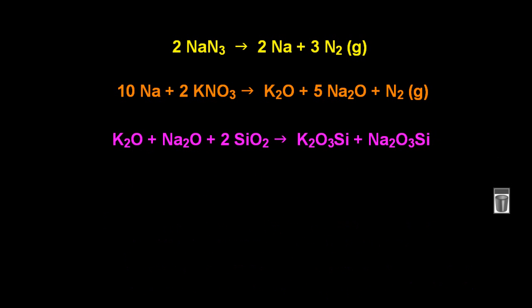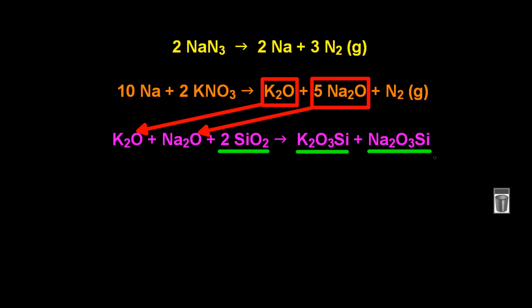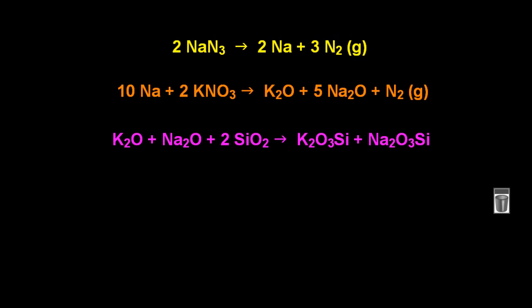So those oxides of sodium and potassium have to be removed because they're basic. It will burn you still. And they go into a third equation where they react with silicon dioxide, which is essentially super pounded sand. And it makes those two chemicals. So that's a glassy kind of material, a silicate glass. And that's safe.